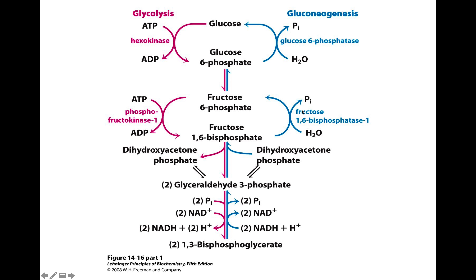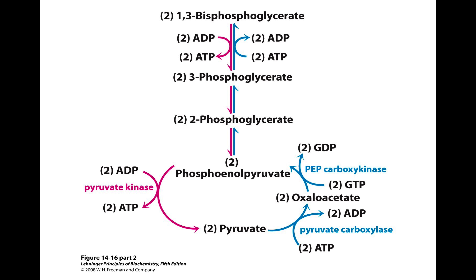The last step to overcome is going from glucose 6-phosphate to glucose. In glycolysis, hexokinase catalyzes this step in reverse; in gluconeogenesis, we use glucose 6-phosphatase. This enzyme essentially only occurs in the liver, making it the final step of gluconeogenesis. The liver can then either use that glucose or potentially store it. This step occurs specifically in the liver and marks the end of gluconeogenesis, starting from pyruvate and working its way up.